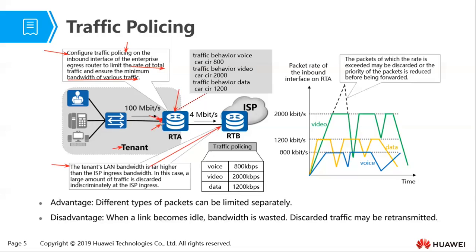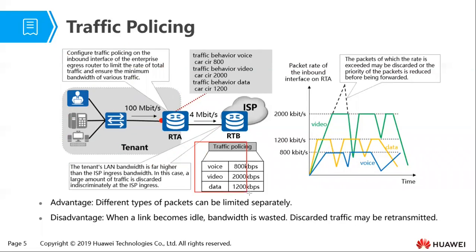Traffic policing is configured at the inbound interface of the enterprise egress router. We have normal data, voice data, and video data in our network. Because we have a maximum of 4 Mbps — that is 4,000 kbps — we can divide this bandwidth among the three traffic types in different ratios depending on their priority. In this example, we reserve 800 kbps for voice, 2,000 kbps for video, and 1,200 kbps for data.